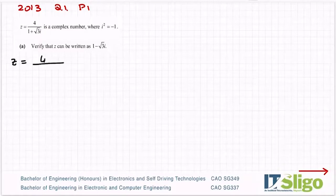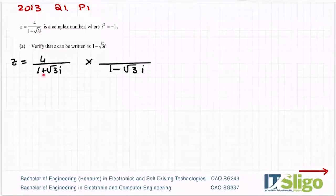So z equals 4 over 1 plus root 3i. There's a rule in maths that states that you're not allowed to divide by an imaginary number. So therefore we have to get rid of imaginary numbers from the bottom line. So how you do that is you multiply the bottom line by its conjugate. And what that means is that you change the sign here in front of the imaginary part.